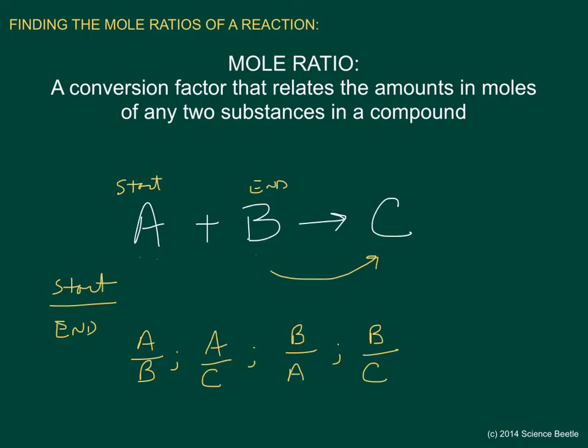Using the last variable here or the last compound C, I'm going to start here and make my way over to A. That will give me a fifth mole ratio of C over A. Then the last mole ratio would be if I go from C all the way to B next door, and so that mole ratio would be C over B. So we have six mole ratios.